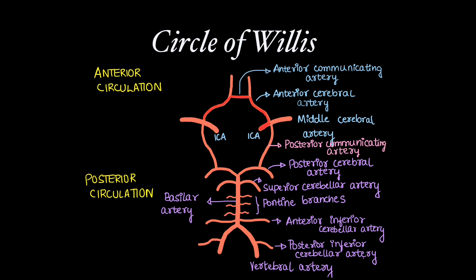The circle of Willis is formed by the anterior communicating artery, anterior cerebral artery, internal carotid artery, posterior communicating artery, and the posterior cerebral arteries.